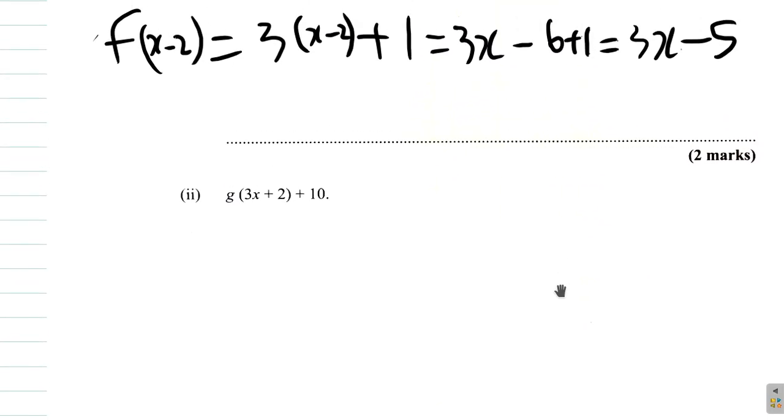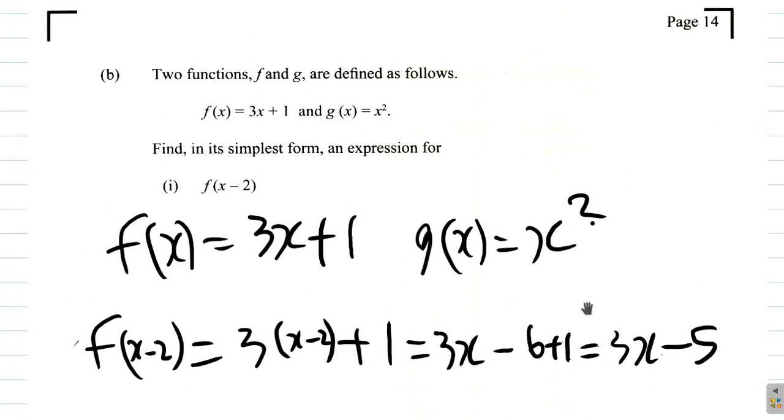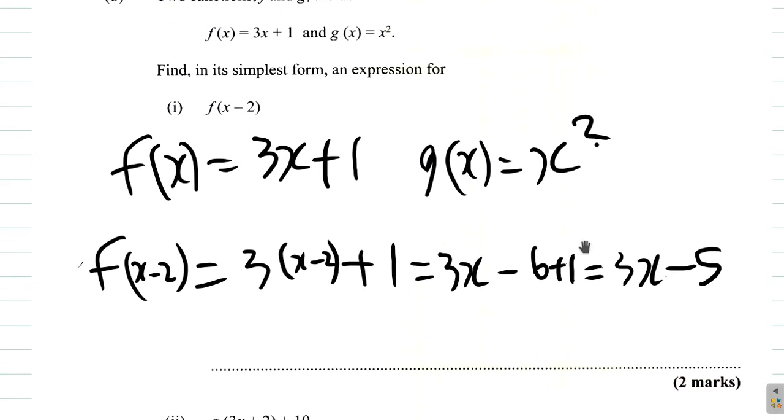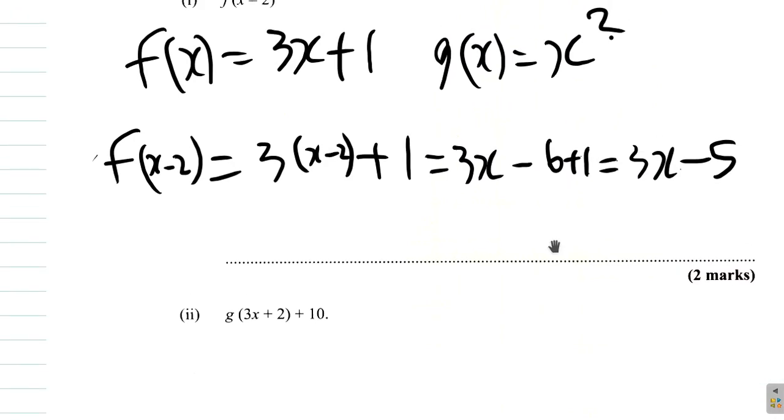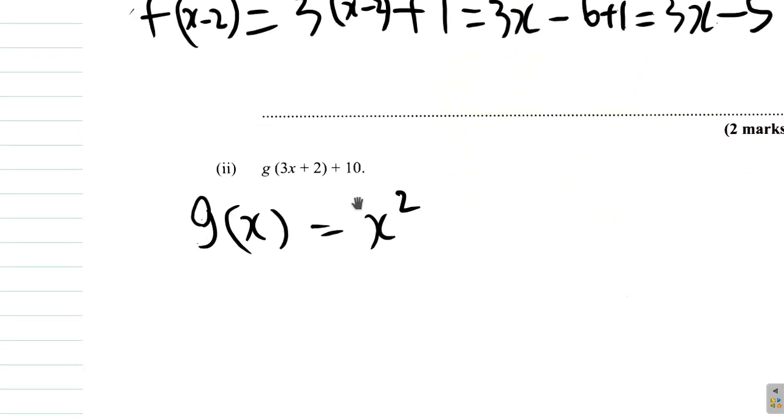Part ii: g of 3x plus 2 plus 10. G of x is x squared. So, let's rewrite that. G of x equals x squared. Now, g of 3x plus 2 plus 10. This x here will be replaced by 3x plus 2.